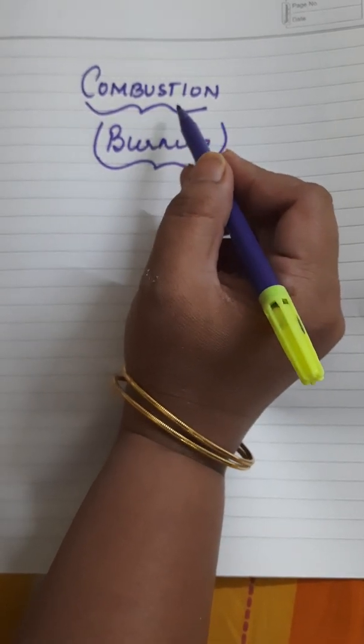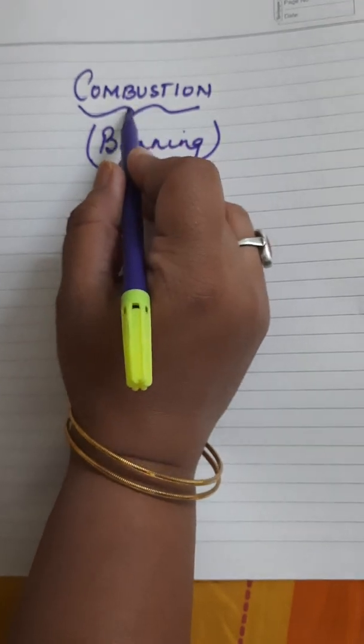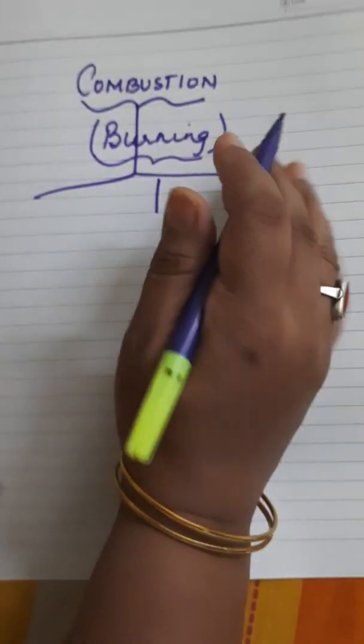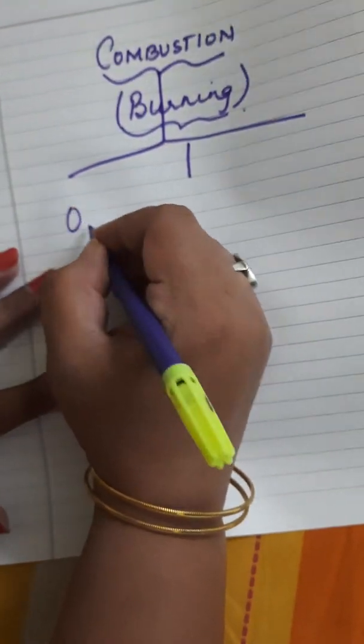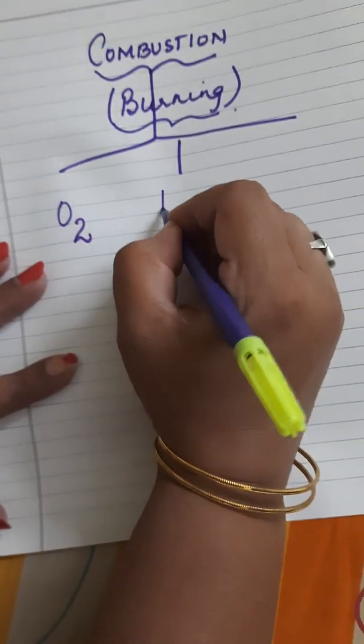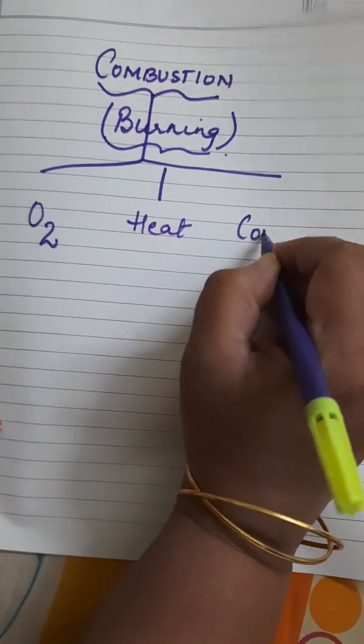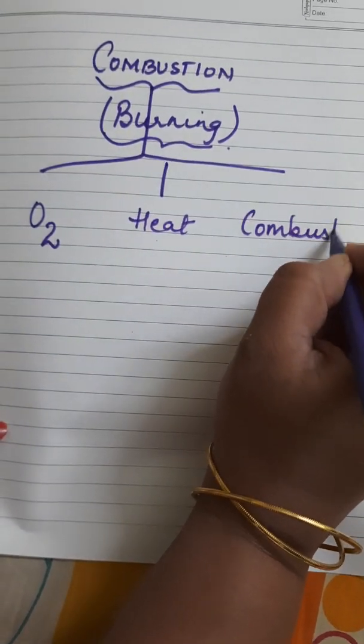What are the three elements which are required for combustion? That is number one, oxygen. Number two, heat. And the main component, that is combustible substance.